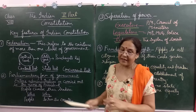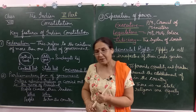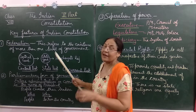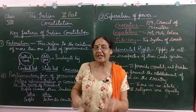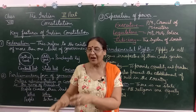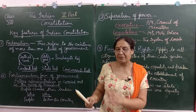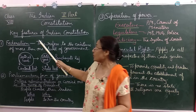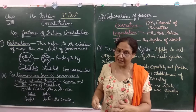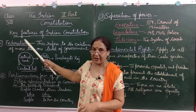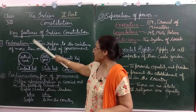There is one more list not in your book, known as the Residuary List. Residuary lists cover subjects that don't come under these three lists — such as computers and software — because these subjects did not exist when our constitution was first framed. So these newer subjects fall under the Residuary List. This all refers to the existence of more than one level of government, which is why India is known as a federal country.